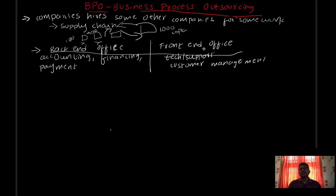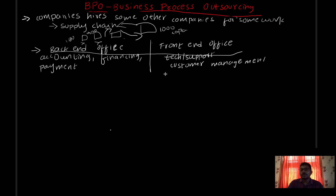For other companies, it is very important to use the front-end office. For example, major IT companies doing technical support and customer support will outsource their BPO. There are many BPO companies in China or India because India has better and best customer support — there are many reasons why outsourcing is done in India.